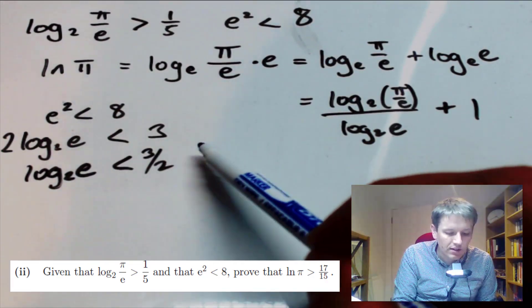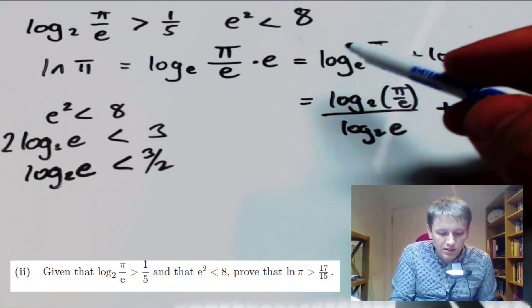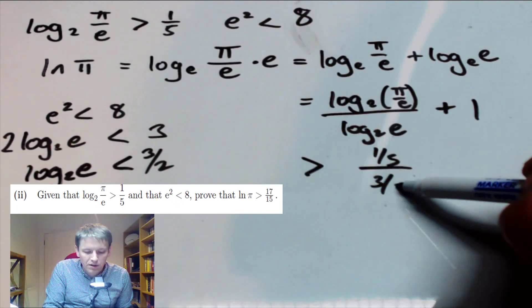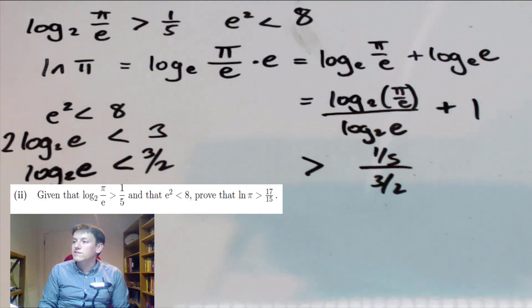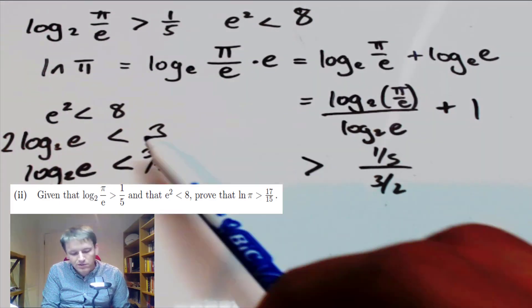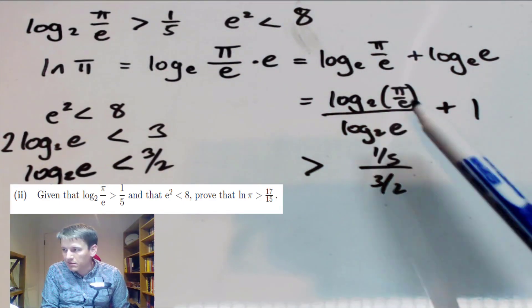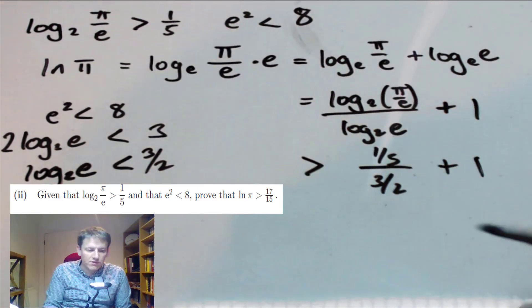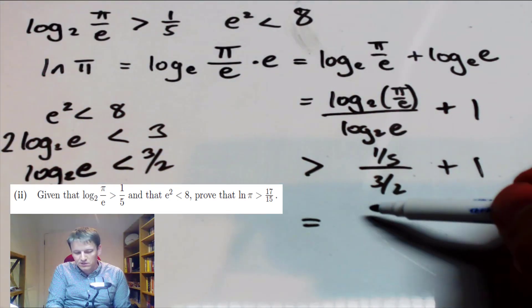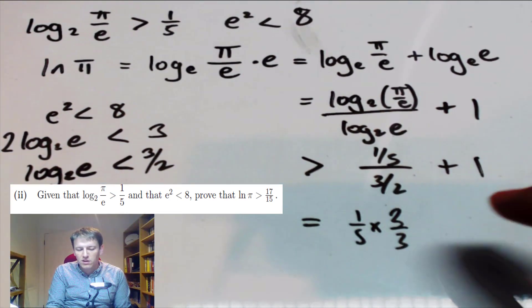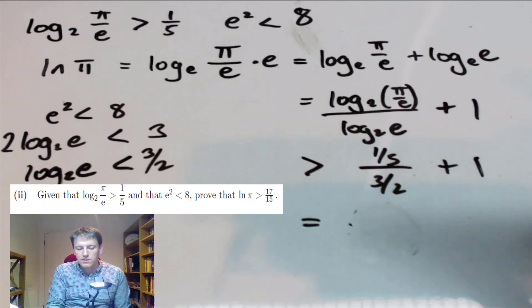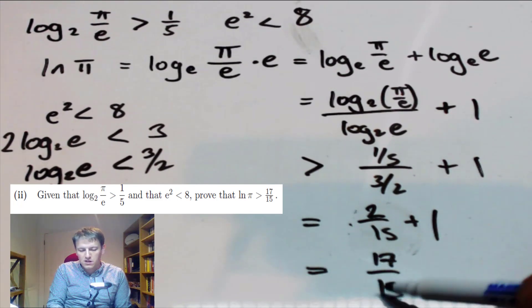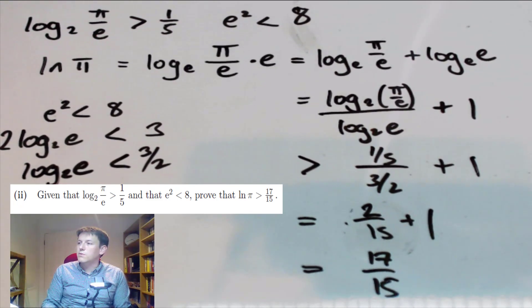Using these two statements — the numerator bigger than 1/5, and the denominator smaller than 3/2 — and noting carefully the direction of the inequalities when dividing, this is larger than (1/5) divided by (3/2). That equals 1/5 times 2/3, which is 2/15. Adding 1 gives 2/15 + 1 = 17/15, and that's exactly what we wanted to prove.